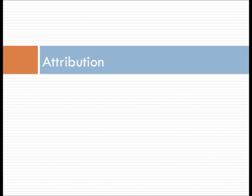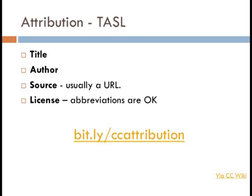Earlier I was talking about the information you should provide when you license your work under Creative Commons — the title, the URL, etc. Those also closely mirror the things you should provide when attributing the creator of a work you're using in your video: the title, the author, the source (usually a URL), and the license — which of the CC licenses it's under. It actually says in the CC license that all of these can be provided in a manner that is reasonable to the medium in which you're working, because different communities including filmmakers have their own expectations for what an attribution looks like.